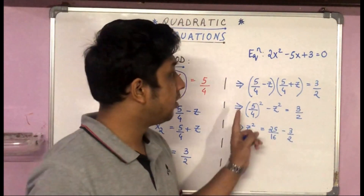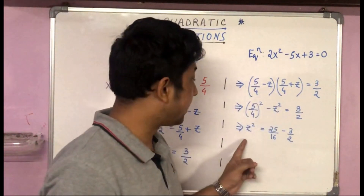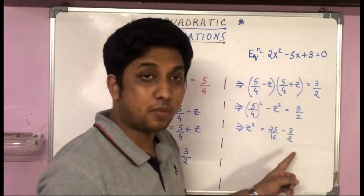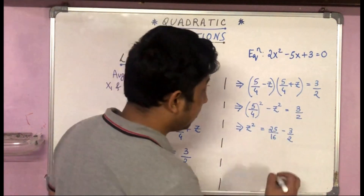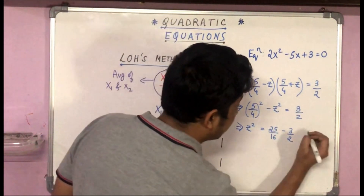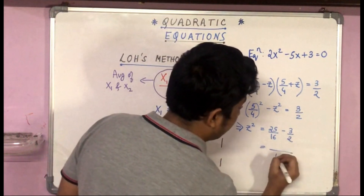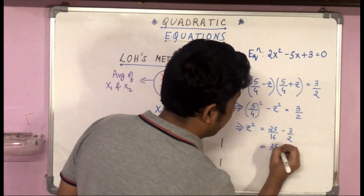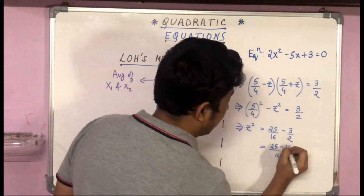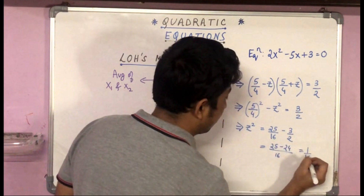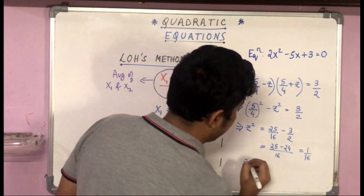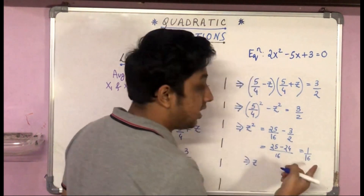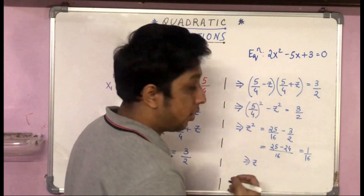Working this out: z² = 25/16 − 3/2 = 25/16 − 24/16 = 1/16. Therefore z = 1/4.